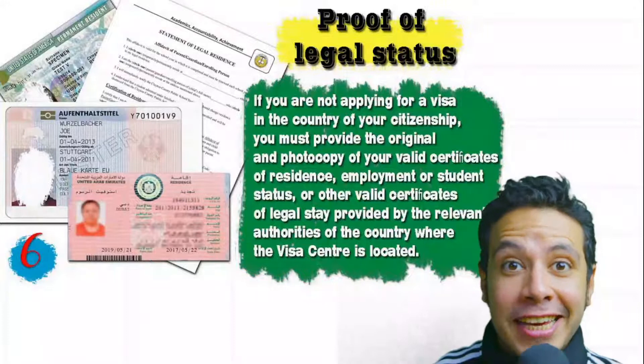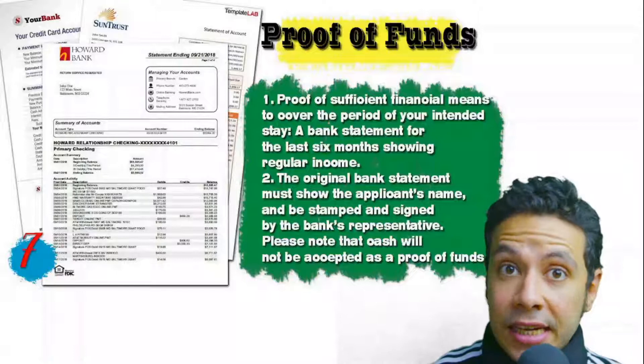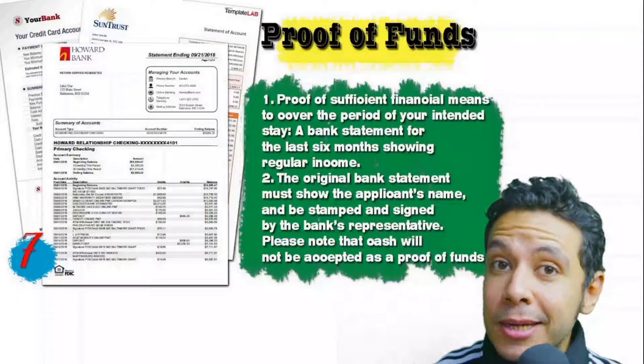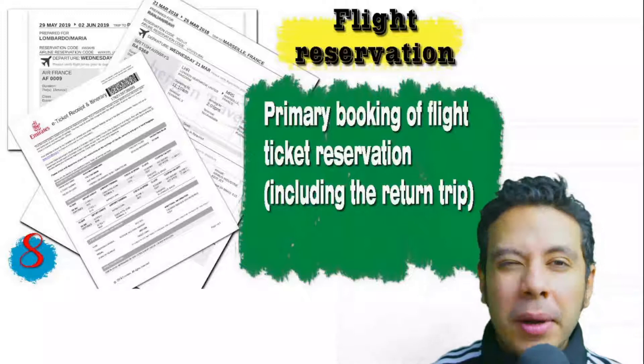You will also need to provide proof of sufficient funds: a bank statement showing your balance for at least six months. The original bank statement must show your name and be signed and stamped by bank representatives. Remember that cash will not be accepted as proof of funds. You should also provide a flight reservation — an initial booking is usually acceptable, but in some cases a confirmed booking is required, and it must include a return ticket.